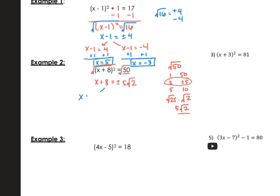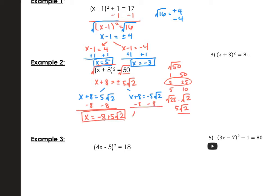We replace the square root of 50 with plus or minus 5 root 2, then break it into 2 equations: x plus 8 equals 5 root 2, and x plus 8 equals negative 5 root 2. Now we just solve — subtract 8 from both sides. These aren't like terms since one is a square root and one isn't, so we write x equals negative 8 plus 5 root 2, and x equals negative 8 minus 5 root 2. You could also write this as x equals negative 8 plus or minus 5 root 2.